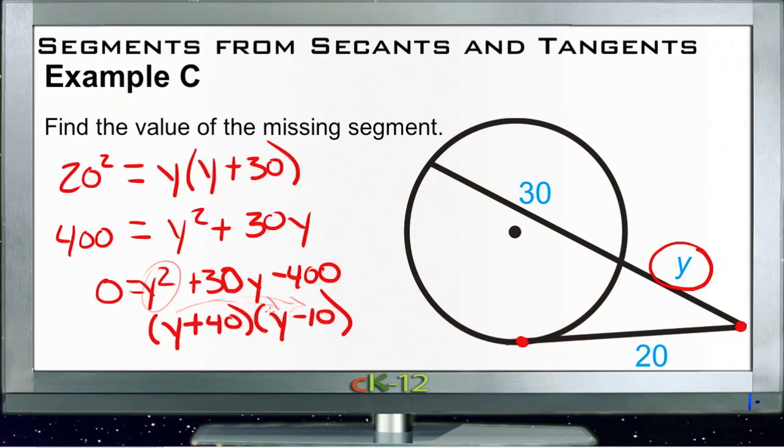We can check that, make sure that works. y times y would be y squared, and y times negative 10 would be negative 10y. 40 times y would be 40y, so those two would combine, 40 minus 10 is 30, so that takes care of that one. And then 40 times negative 10, negative 400, so that works.